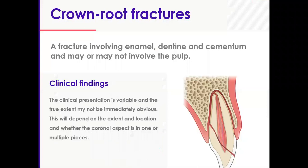Crown root fractures are those involving the enamel, dentin, and cementum, and may involve the pulp — or if lucky, they may not. Personally, these are the most complex to manage depending on the severity of the injury. The unsalvageable ones are unsalvageable, the minimal ones are minimal, but those that fit in between — because no two injuries are the same — can cause quite a bit of difficulty in management.